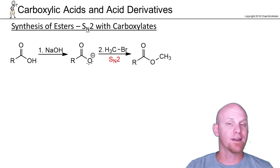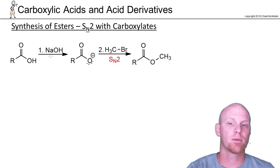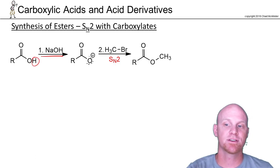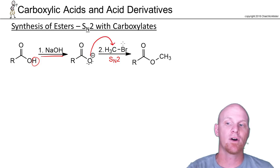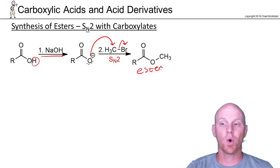Finally, there's one more way to make an ester. It's not nucleophilic acyl substitution in the traditional sense. We start with the carboxylic acid, add NaOH to simply deprotonate it, forming the carboxylate. Then that carboxylate just does an SN2 reaction — it attacks an appropriate alkyl halide, kicks off the leaving group, and that gives us our ester. So we're doing SN2 with a carboxylate as the nucleophile.